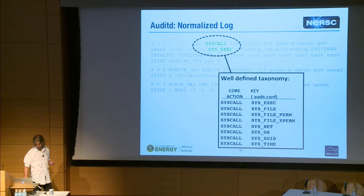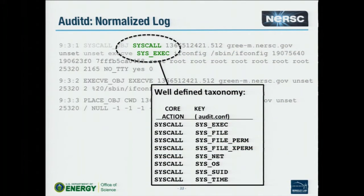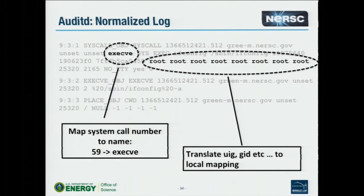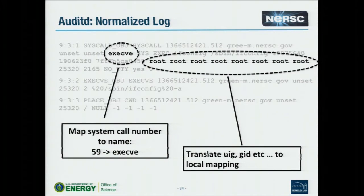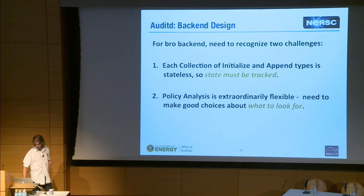An example of log normalizing: syscall 59 is exec, a very common one. You want to keep 'exec' around and not 59, because who knows what will come down the pipe. The notion of identity is held in an 8-tuple: UID, GID, effective UID, and so on. You have to watch all of them at the same time. But we'll get to the Bro back end, because that's where Bro lives and that's what we're here to talk about.